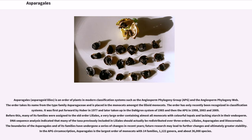The order has only recently been recognized in classification systems. It was first put forward by Huber in 1977, later taken up in the Dahlgren system of 1985 and then the APG in 1998, 2003, and 2009. Before this, many of its families were assigned to the old order Liliales, a very large order containing almost all monocots with colorful tepals and lacking starch in their endosperm.